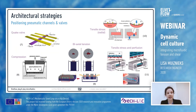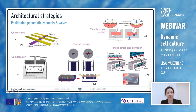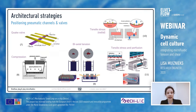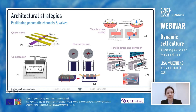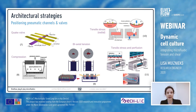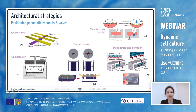Here are some strategies for where to position your pneumatic channels and valves in your chip. The first example is the Quake valve, named after Stephen Quake whose lab first described this. In this diagram the valve is comprised of a fluid channel in purple and one or more air channels in yellow, and when air is pushed through an air channel it depresses the flow of liquid in the fluid channel. You can use these as on/off switches to start or stop fluid flow, or program them sequentially to create a kind of pulsatile flow in the channel below.